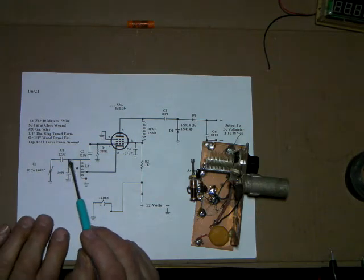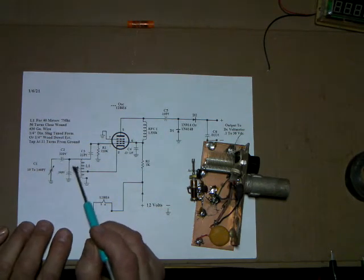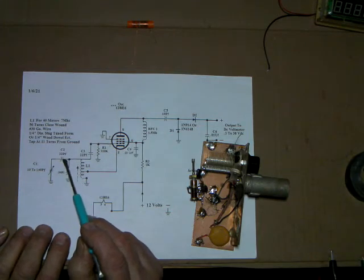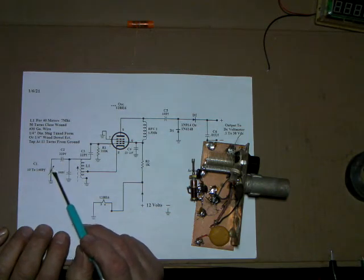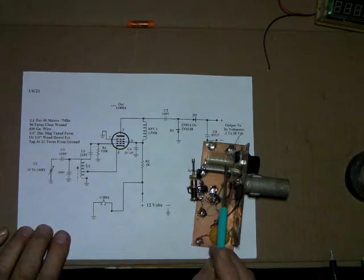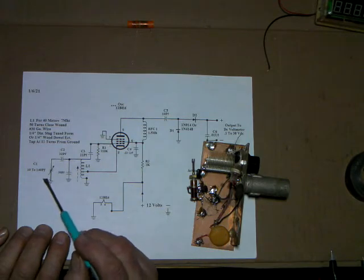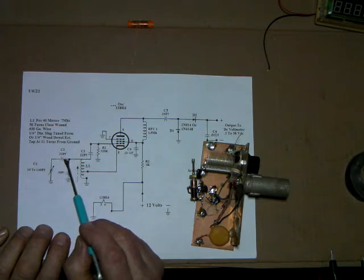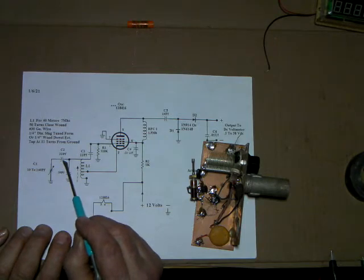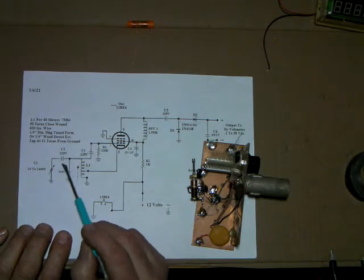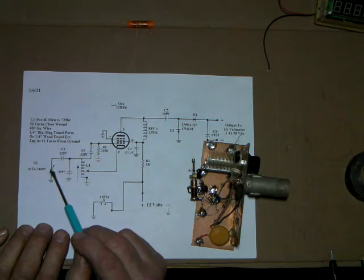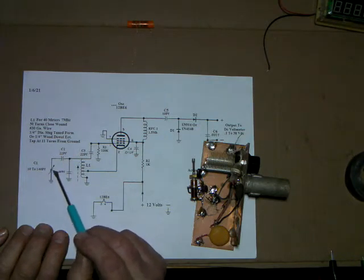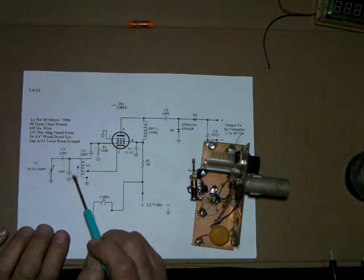What that does, it limits the amount of travel. So I've got a 10 to 140 right here but maybe it only needs another 15 picofarad. So you could limit it with this here. It actually, it's kind of like a gear reducer. It slows the tuning down and the smaller the number here, the more you can, the farther you can turn this tuner and get a small effect on your frequency.